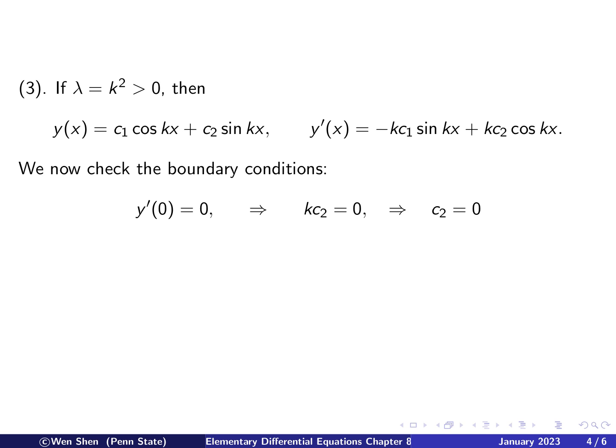Okay, let's check the boundary conditions. So the first one is y prime equals 0. So when x is 0, sine is 0, cosine is 1, we just get k c2. And k is not 0, therefore c2 is 0.